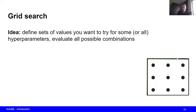In grid search, we first select the hyperparameters over which we want to search. For example, if we have a neural network trained with gradient descent, maybe we want to search over the learning rate and the momentum hyperparameter. For both of these hyperparameters we define sets of values that we want to try out, and then we simply evaluate all possible combinations. This can be visualized as a grid.